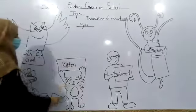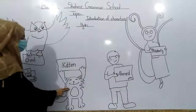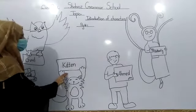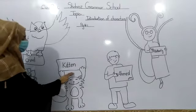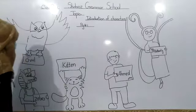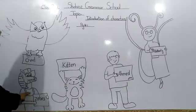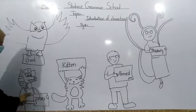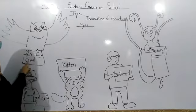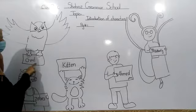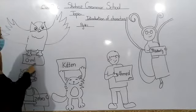Animal. And this is Kitten. Kitten. Kitten. What is this? Kitten. And this is Zebra. Zebra. Zebra. What is this? Zebra. And this is Owl. Owl. Owl. What is this? Owl.